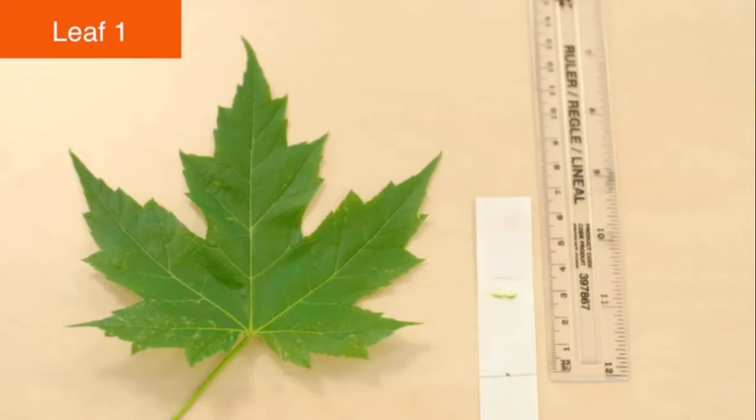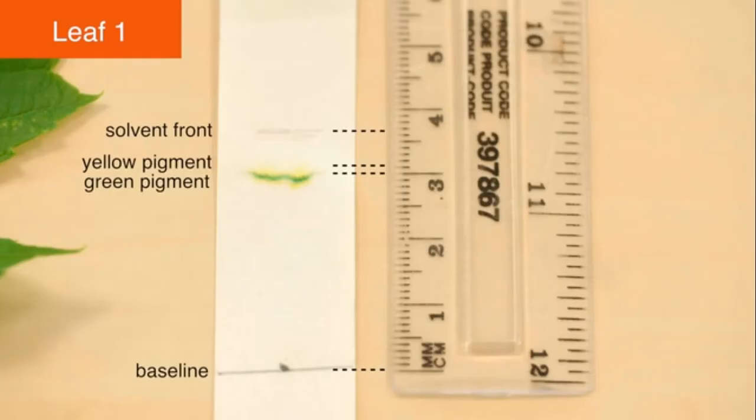The number and color of any pigments is recorded in the results table. A ruler is used to measure the distance travelled by the solvent front from the horizontal pencil line. This is recorded in the results table. The distance travelled by any pigments found on the strip is also measured and recorded in the results table. These two values can be used to calculate the individual retention factors for each pigment.